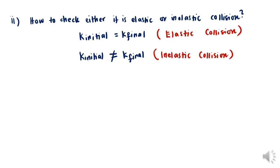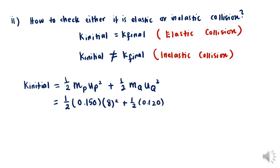But if K initial does not equal K final, this is an inelastic collision. Let's start by calculating the initial kinetic energy using one half MP times UP squared plus half MQ times UQ squared. Substitute all the information and we get 6.3 joules.